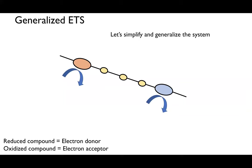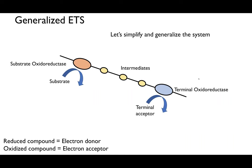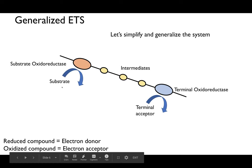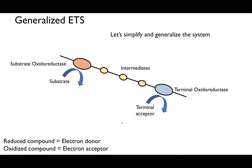We can generalize this electron transport system for any number of organisms. We have a substrate-based oxidoreductase — a substrate comes in and donates electrons — some form of intermediates, and then a terminal oxidoreductase and terminal electron acceptor. The reduced compound is the electron donor and the oxidized compound is the electron acceptor.